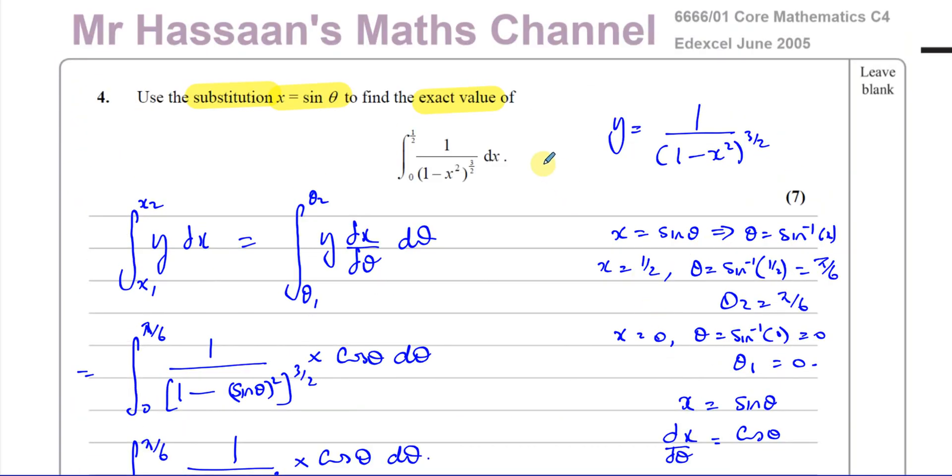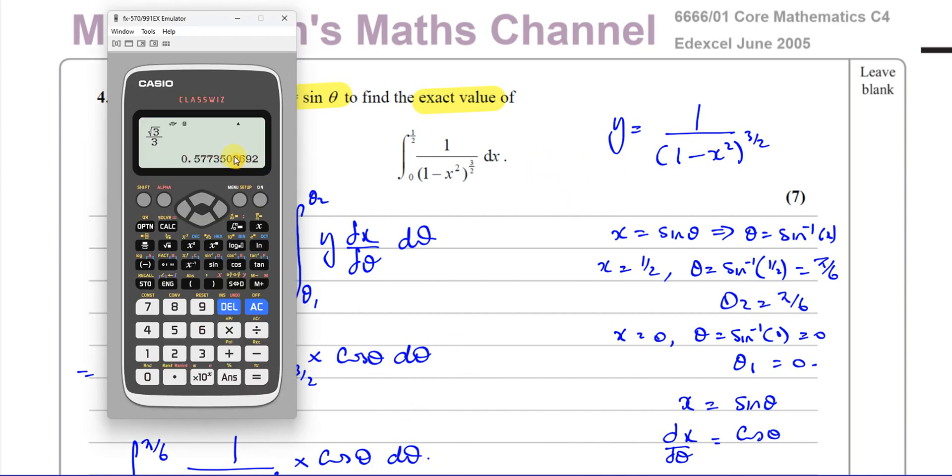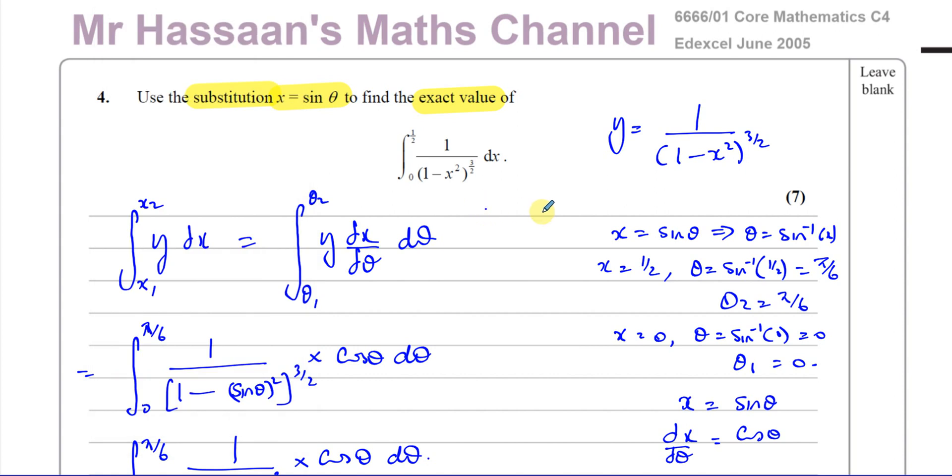Now, if you just wrote down that decimal value as your answer, you won't get any marks for that at all. Because the examiners know you can use this calculator to give the numerical answer.